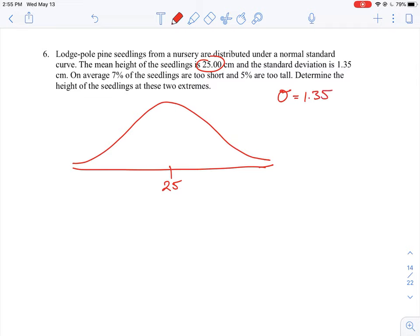Now it says here on average 7% of the seedlings are too short and 5% are too tall. So in and amongst this curve, the first 7% of the seedlings are too short. So the number, they are going to be less than the mean. And then 5% at the very end are too tall. So if you remember what that is, this is going to be the probability for the area under the curve.